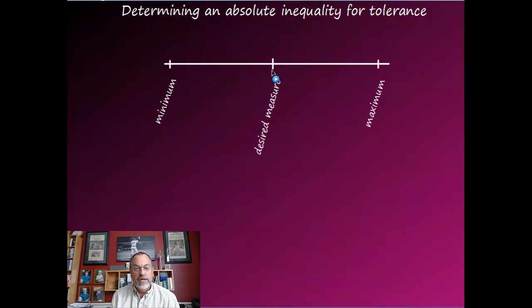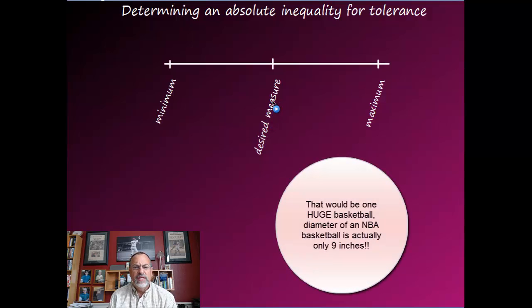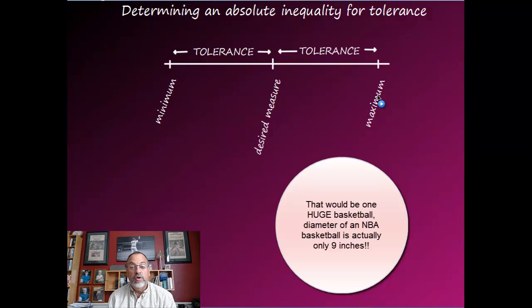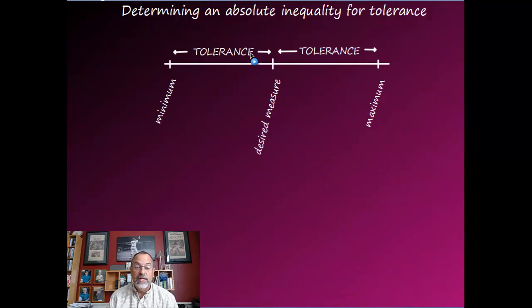Visually, you have your desired measurement — what you would like your item to be. For example, basketballs are supposed to be 18 inches in diameter. When you make a basketball, it might be a little bit over or under 18. How far above or below 18 you're willing to accept for an official basketball defines the tolerance. The desired plus the tolerance gives the maximum diameter accepted; the desired minus the tolerance gives the minimum.